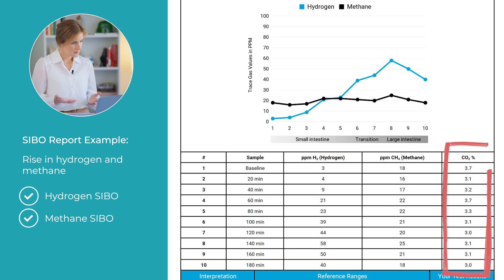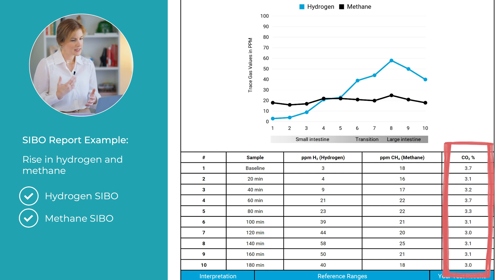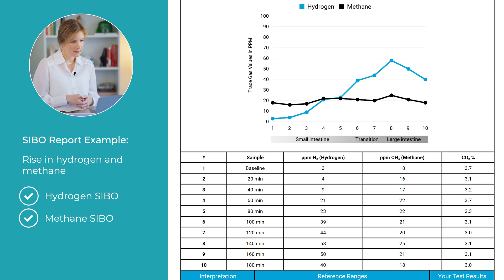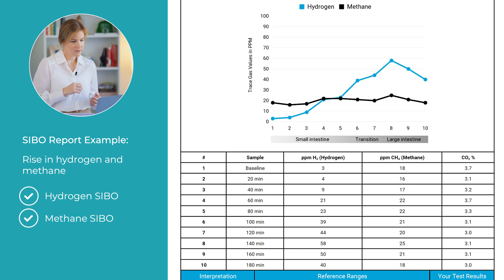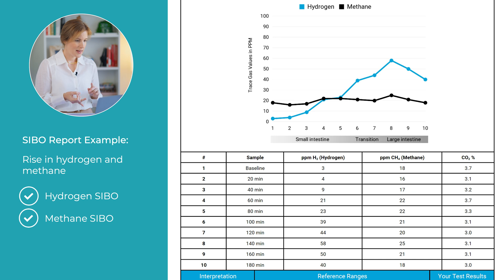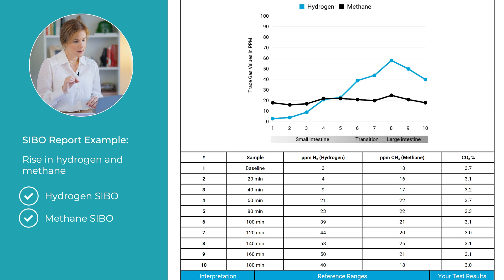The final column is the percentage of carbon dioxide in your breath sample, and it's used as a measure of whether the sample is valid and was collected in the right way. The number is normally between three to four percent, and if the level is below 1.5 or over 5.5, the sample ideally shouldn't be used. Let's focus back in on the hydrogen and methane columns. They report the levels of hydrogen, methane, and in some tests hydrogen sulfide gas, in ppm.